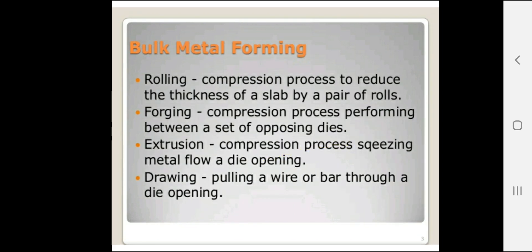Bulk metal forming includes rolling, forging, extrusion, and drawing operations. In rolling, a compression process reduces the thickness of a slab using a pair of rolls. In forging, the compression process performs between a set of opposing dies, compressing metal between punch and die. Extrusion is a compression process squeezing metal flow through a die opening to get a desired shape.